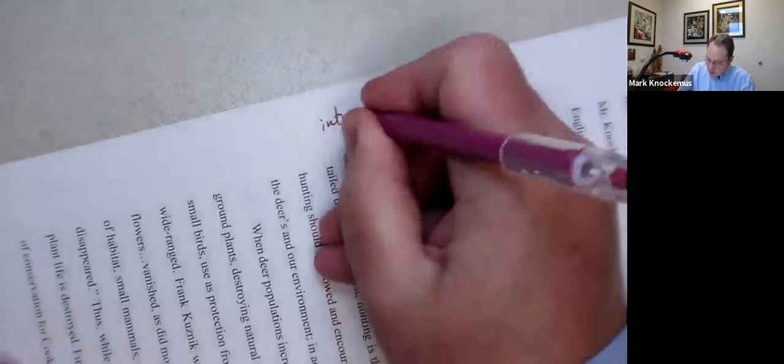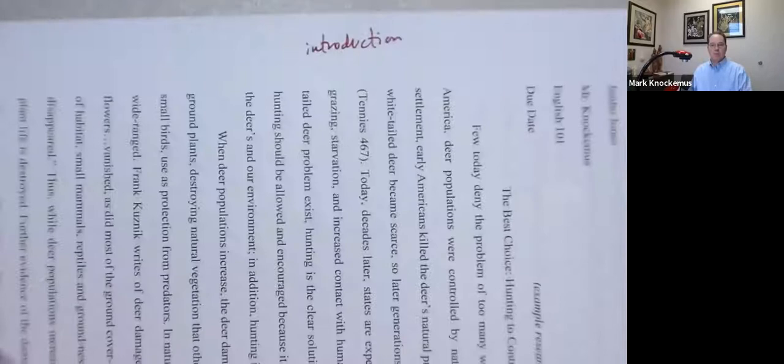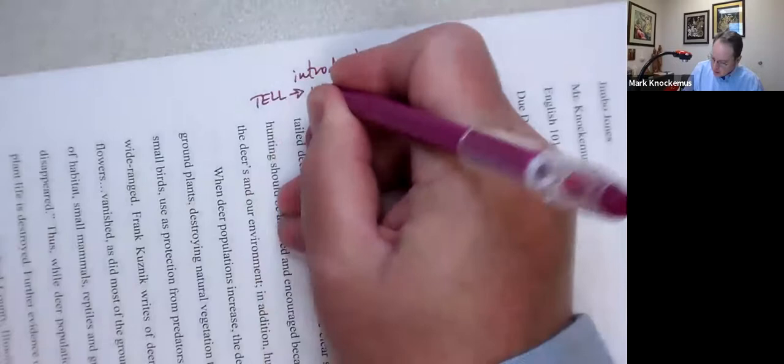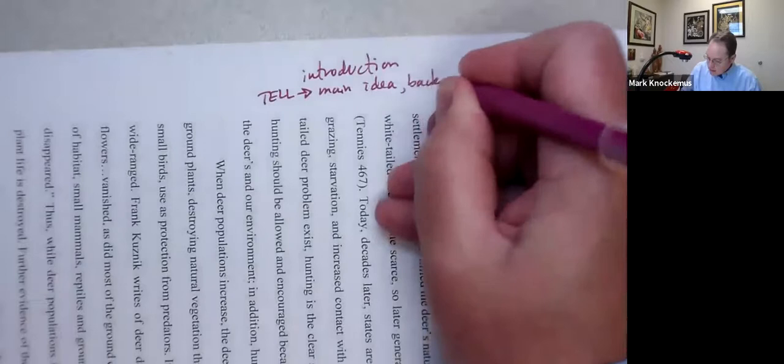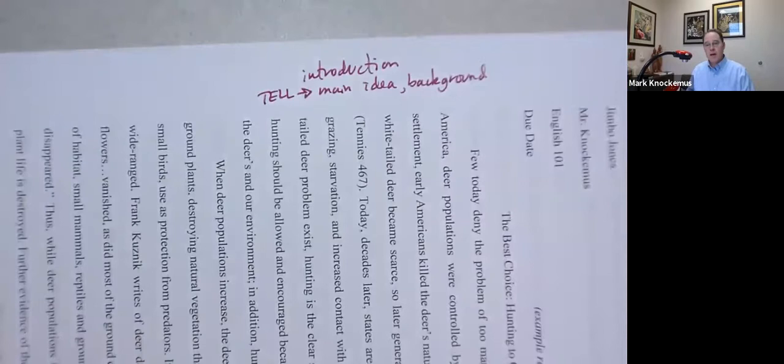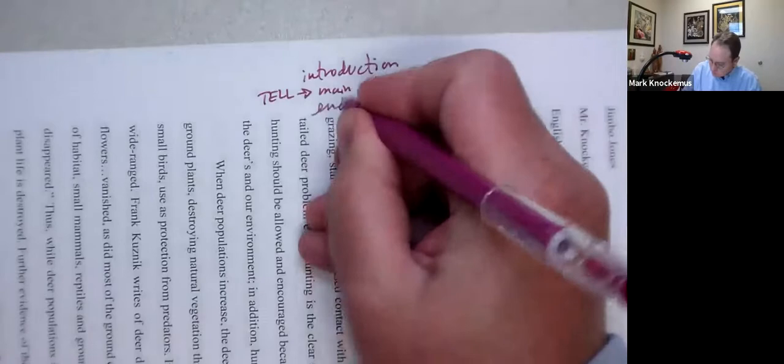This first paragraph is going to be my introduction. What's going to happen here? This is going to be a tell paragraph. I want to make sure the reader knows the purpose of the paper, my main idea. And since this is an argument, I need to include some background information so the reader has foundational knowledge to work with so I can help persuade the reader. And then, of course, I want to end with my thesis statement.